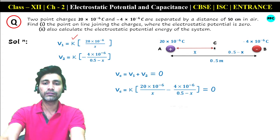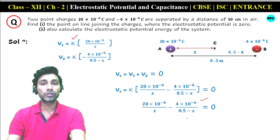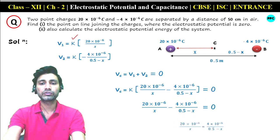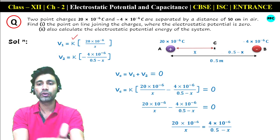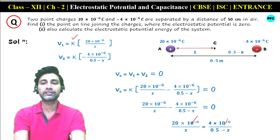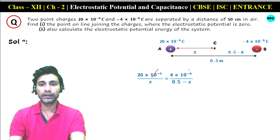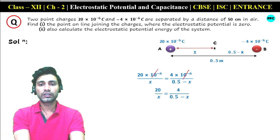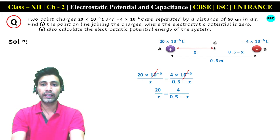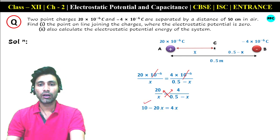I place the values: K × [20×10⁻⁶ / X] + K × [−4×10⁻⁶ / (0.5 − X)] = 0. Since K is common in both terms, I take K outside the bracket. Taking K to the right side toward zero makes it zero, so we get: 20×10⁻⁶ / X − 4×10⁻⁶ / (0.5 − X) = 0. Taking the second term to the right side makes it positive: 4×10⁻⁶ / (0.5 − X).